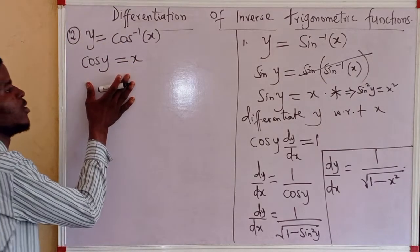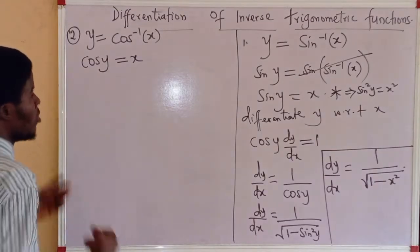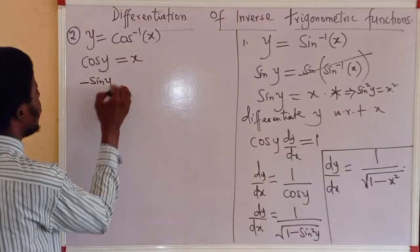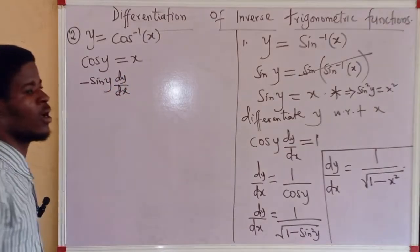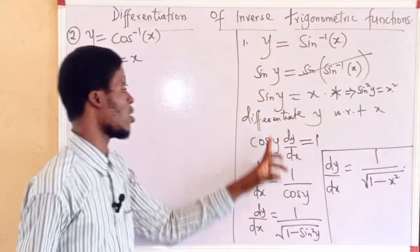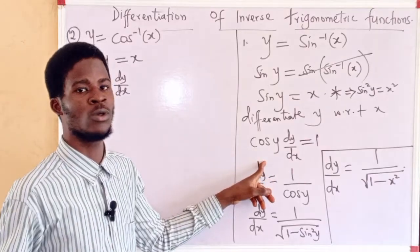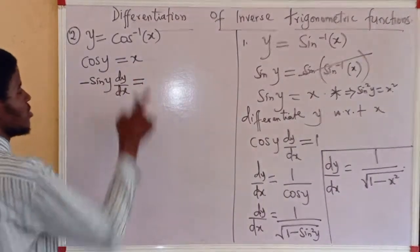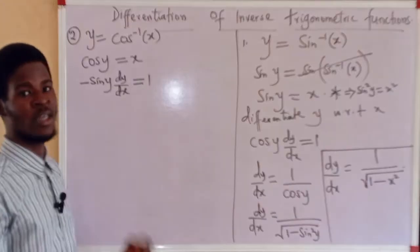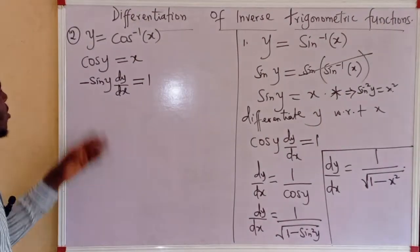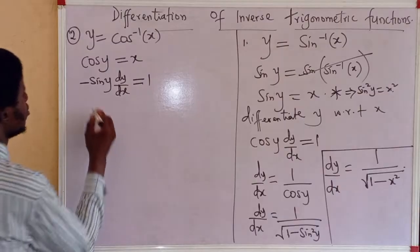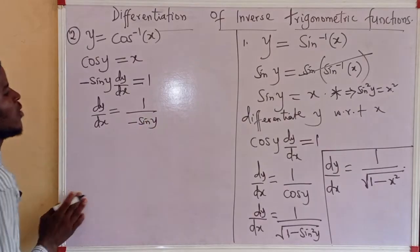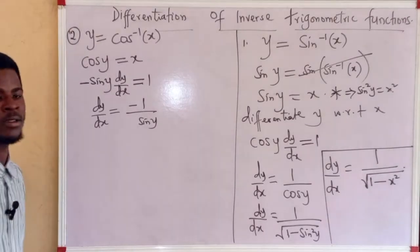From here, I will differentiate y with respect to x. Differentiating cos y gives −sin y · dy/dx. Remember, if we differentiate the cosine function, we obtain the negative sine function, and that's what we have here. Differentiating x with respect to x gives 1. Making dy/dx the subject of the formula: dy/dx = 1 over (−sin y), which I can write as −1 over sin y.